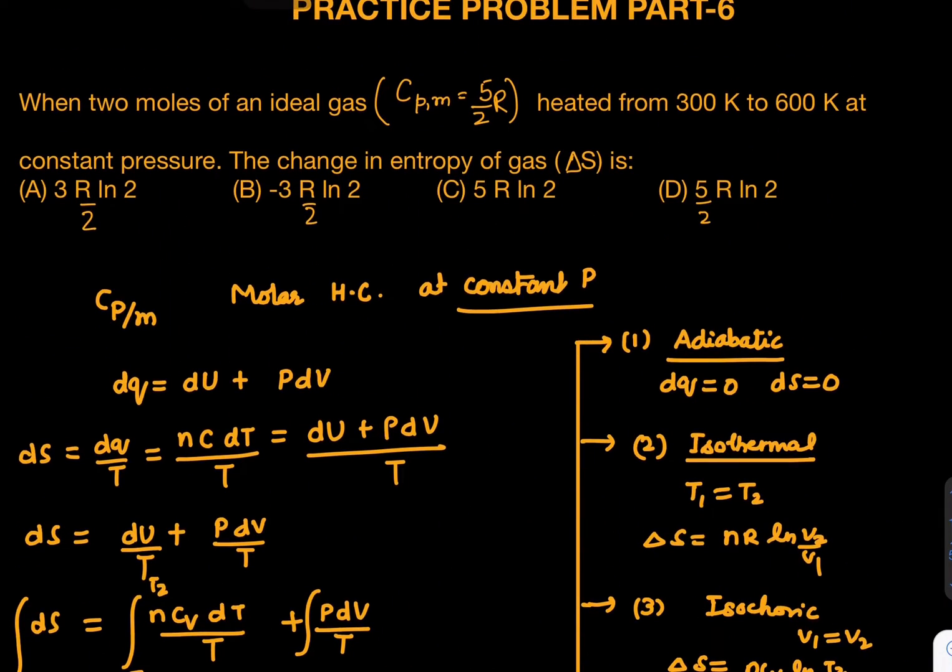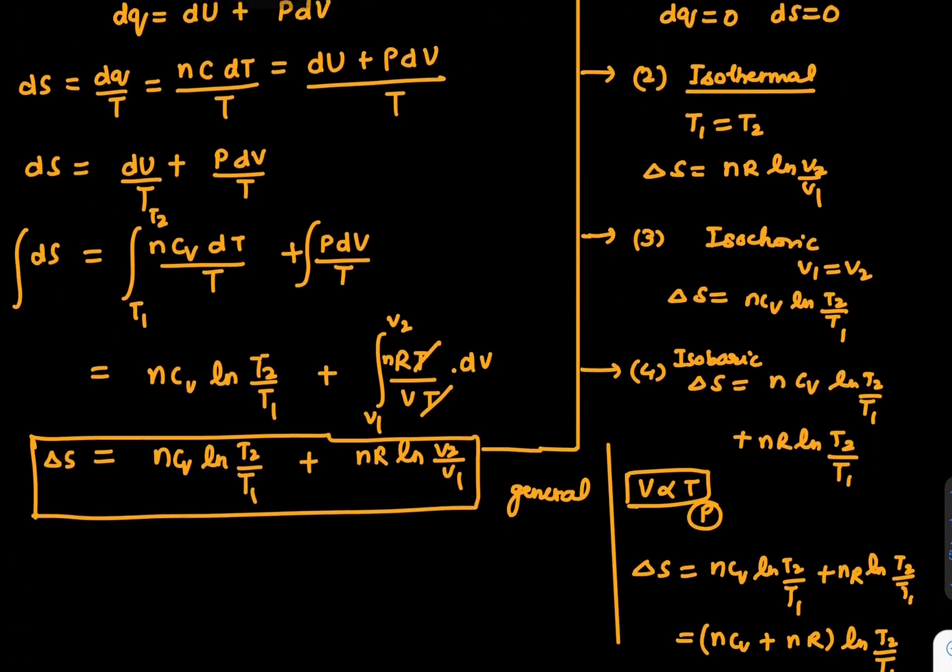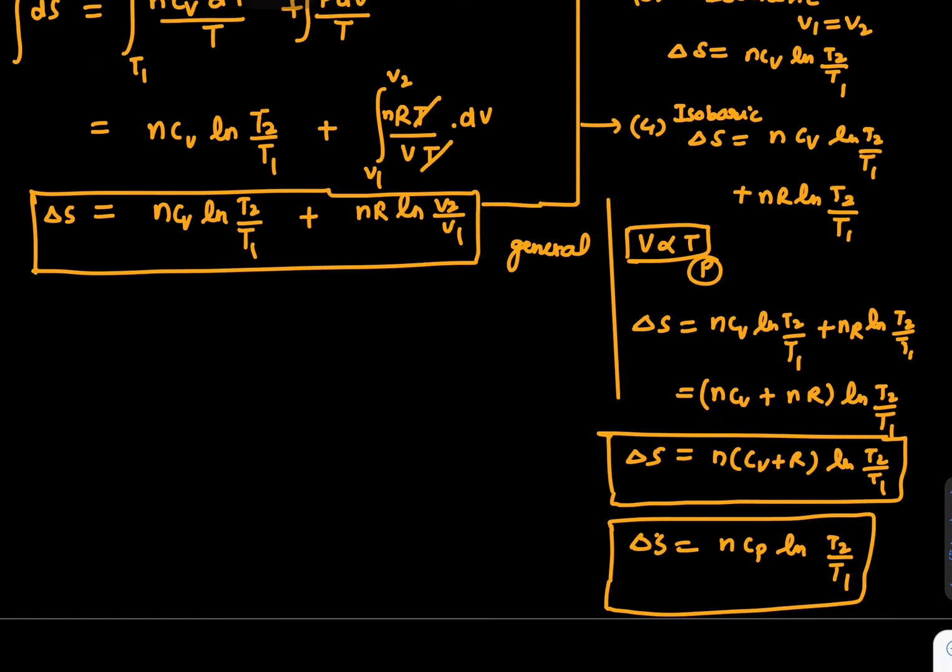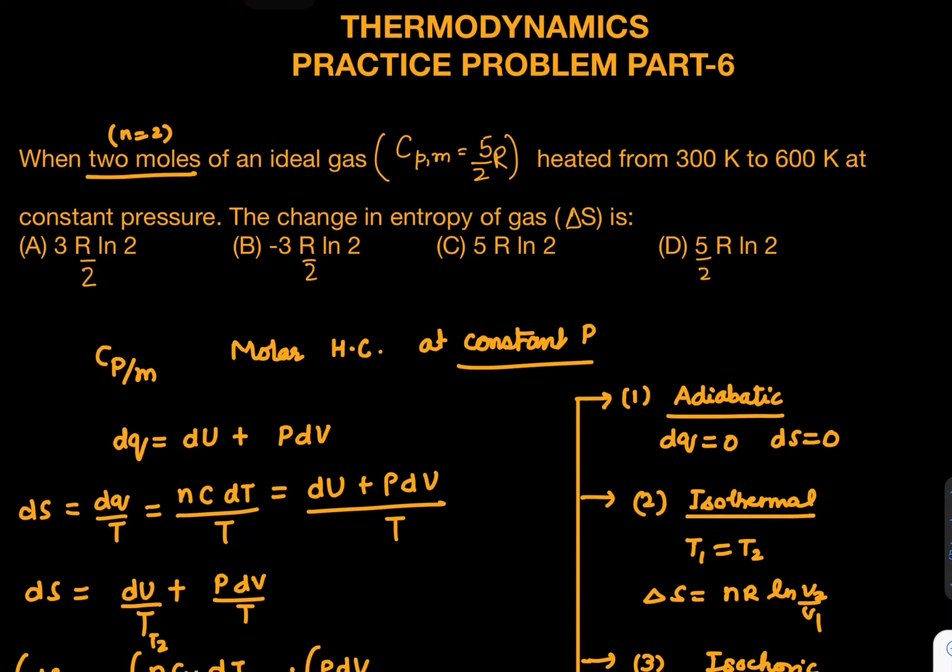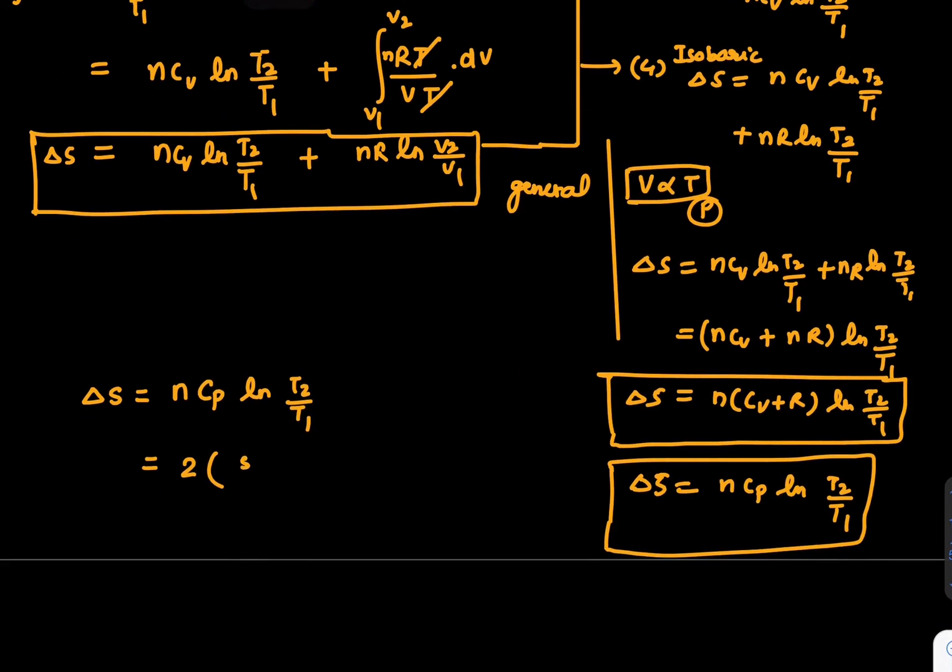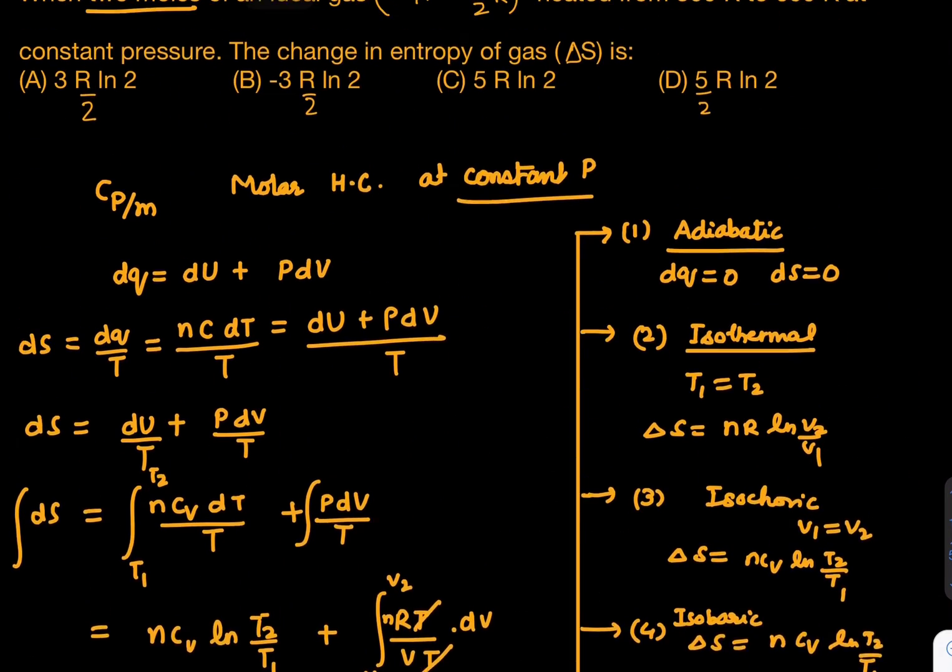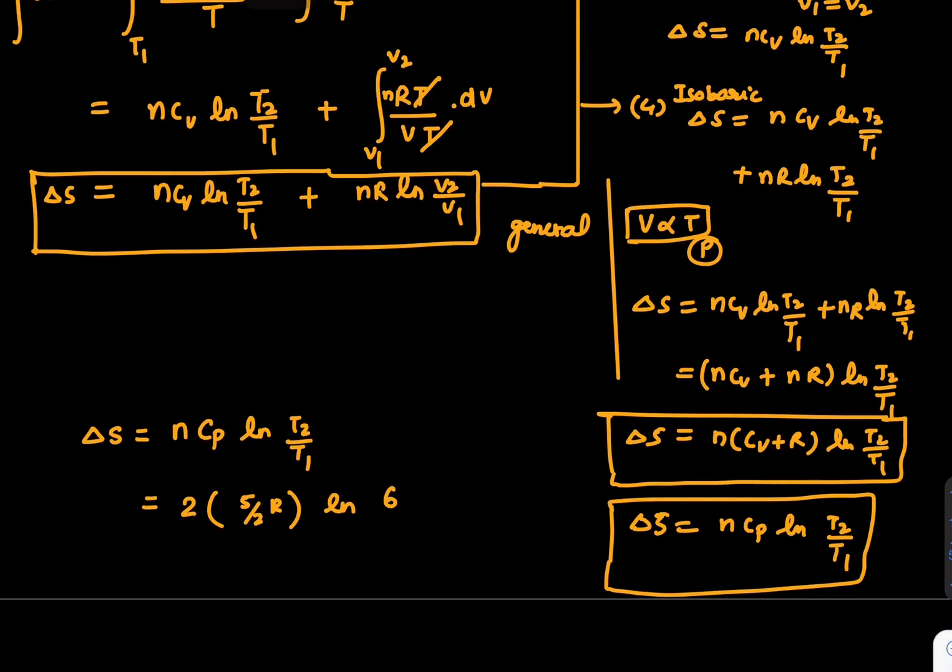So ΔS = 2 × (5R/2) × ln(600/300) = 5R ln2. Where is the final answer? It becomes 5R ln2. Look at this—we have option C which represents 5R ln2, and that becomes the right answer.